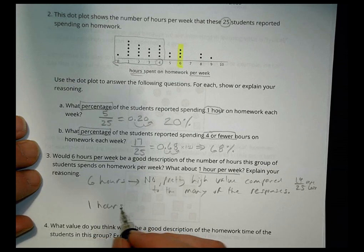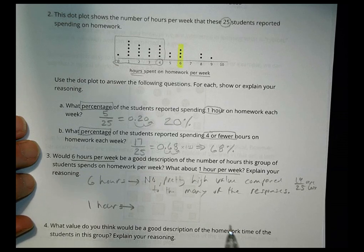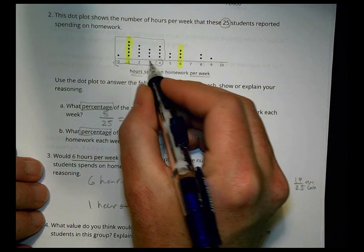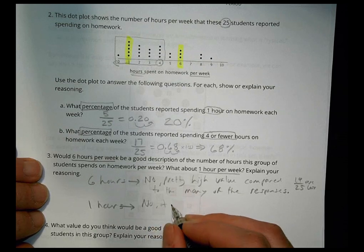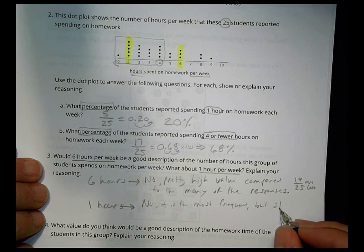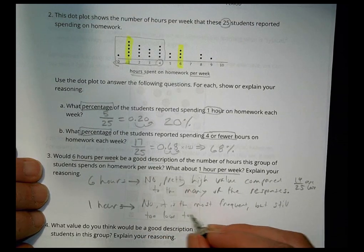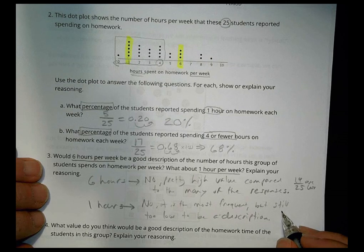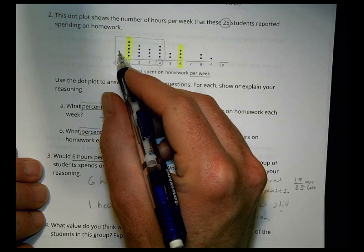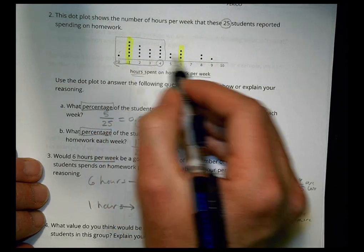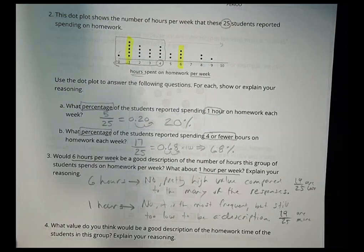What about one hour per week? And looking at the one hour, does that represent this sample here? Does it represent a good description of it? Well, again, one hour is over here. And while it does have the most, it had five, there's a lot more that go past there. So we would say no, it is the most frequent, but still too low to be a description. Because there's five there. That means there's 20, and actually, if you don't count the zero, there are 19 out of 25 are more. So that means there's 19 values here that are actually bigger than one. So, again, not a good description of that group.